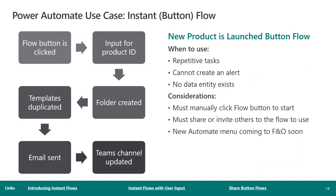You can also enable flows to be manually triggered. These instant flows are very useful for repetitive tasks where you can't create an alert rule or there isn't a business event associated with it. For now, the user needs to manually click a workflow button in the Power Automate app, and you can share the flow with them so they can do that. We're also working on a new feature that will add a Power Automate menu button into Finance and Operations forms.